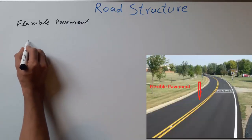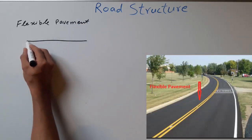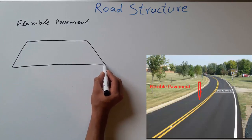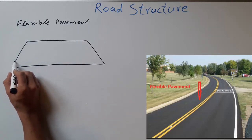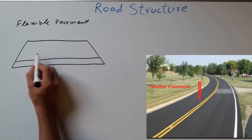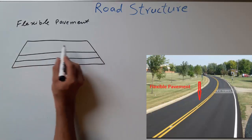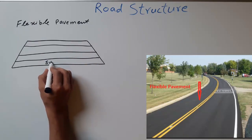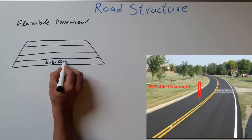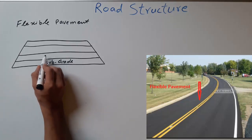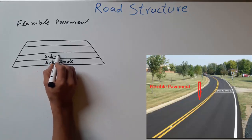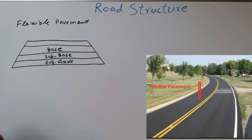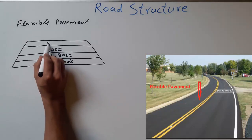I'm going to draw a diagram. This is a road cross-section. We have four parts: first we have subgrade, second we have sub base, third one is a base, and the final one is surfacing.